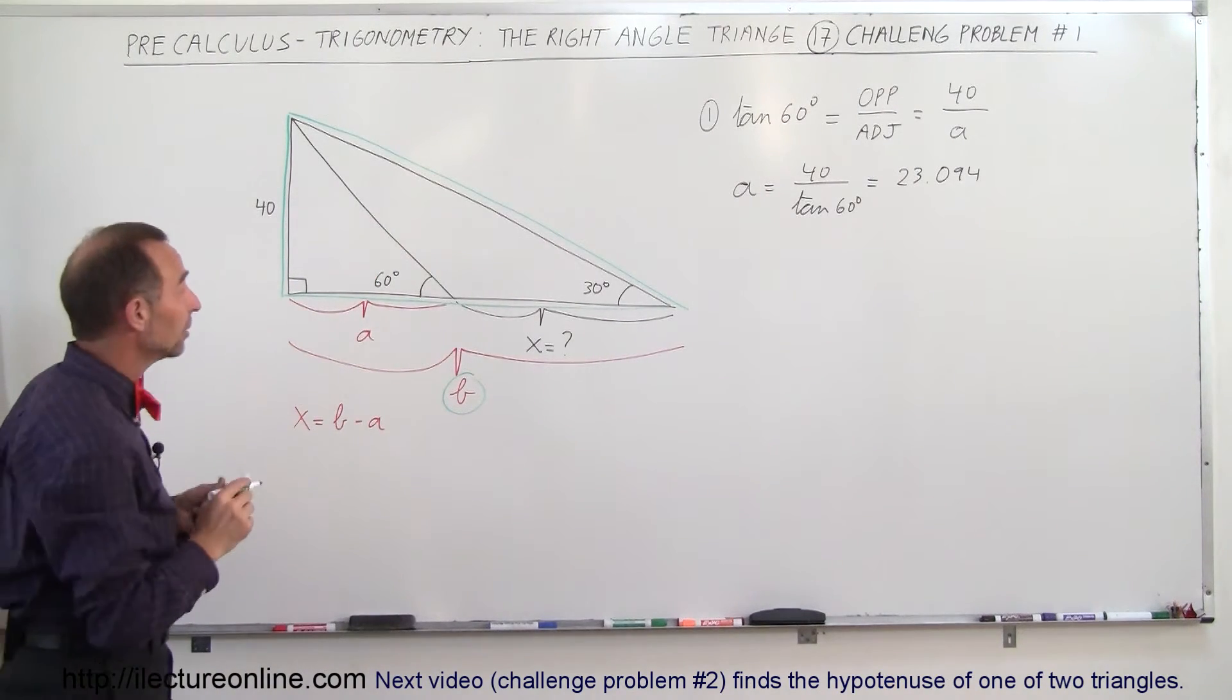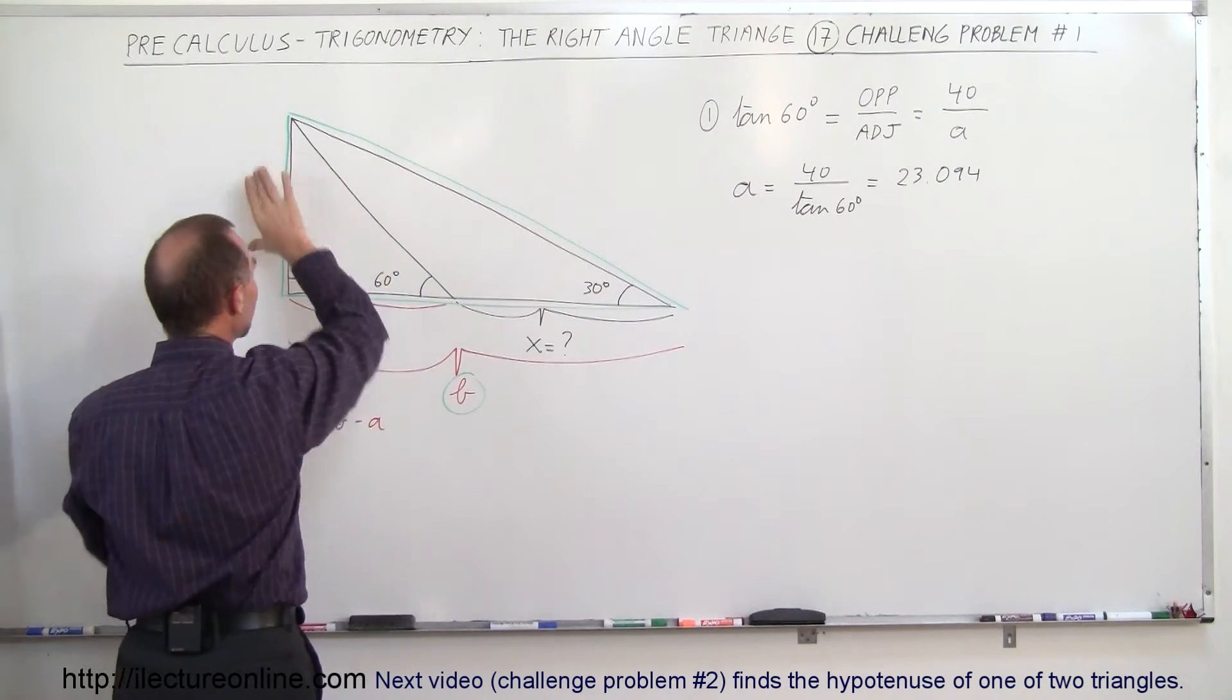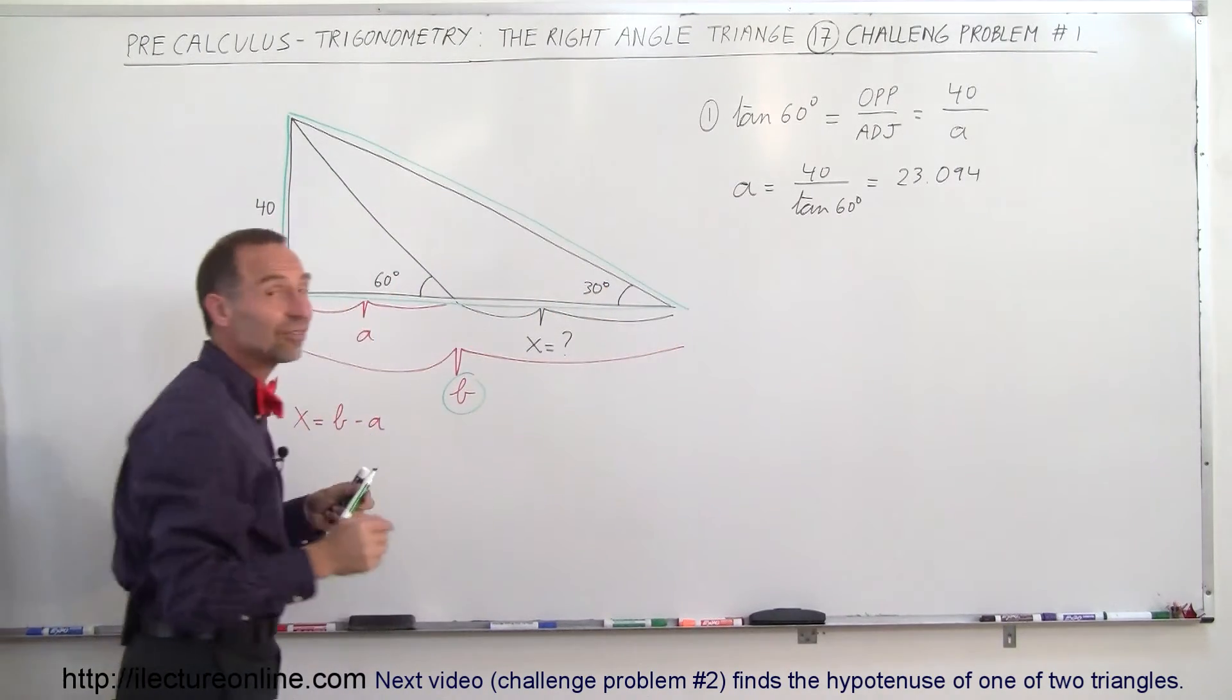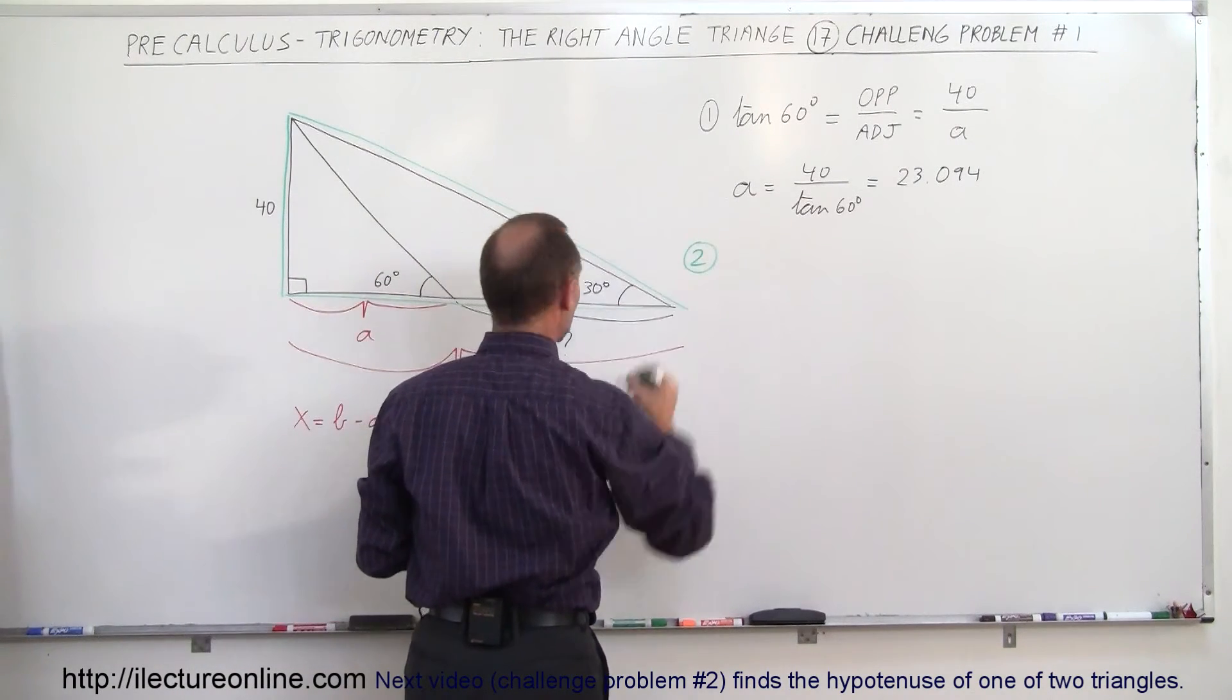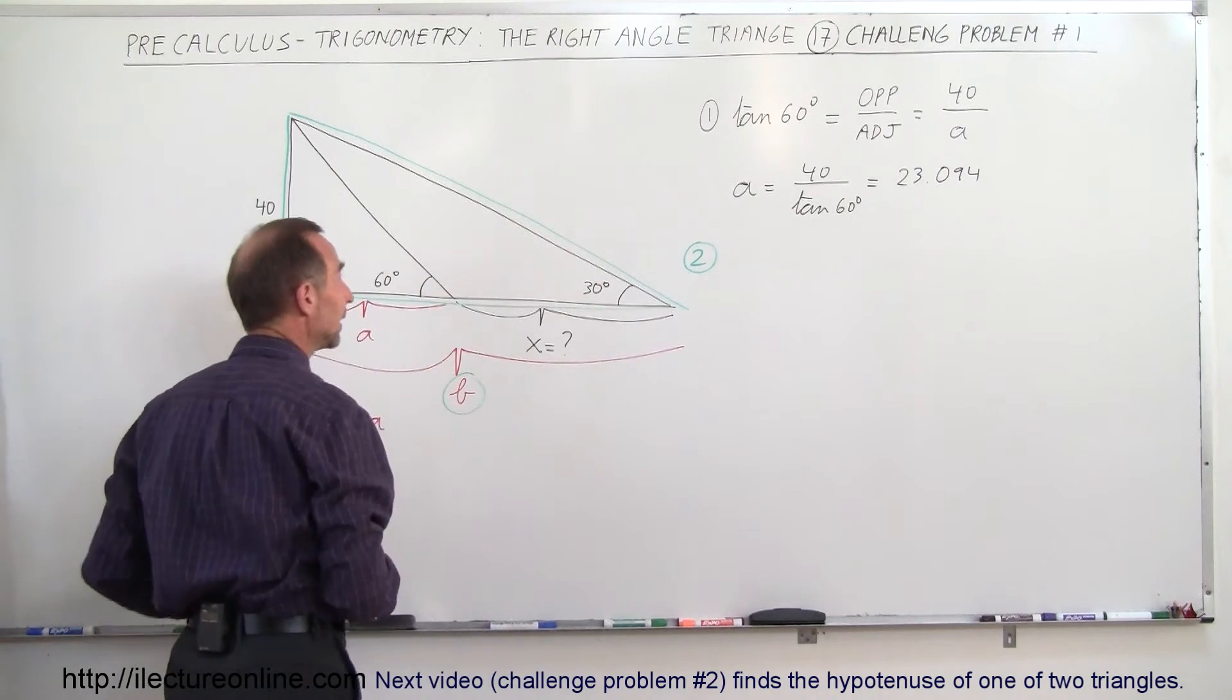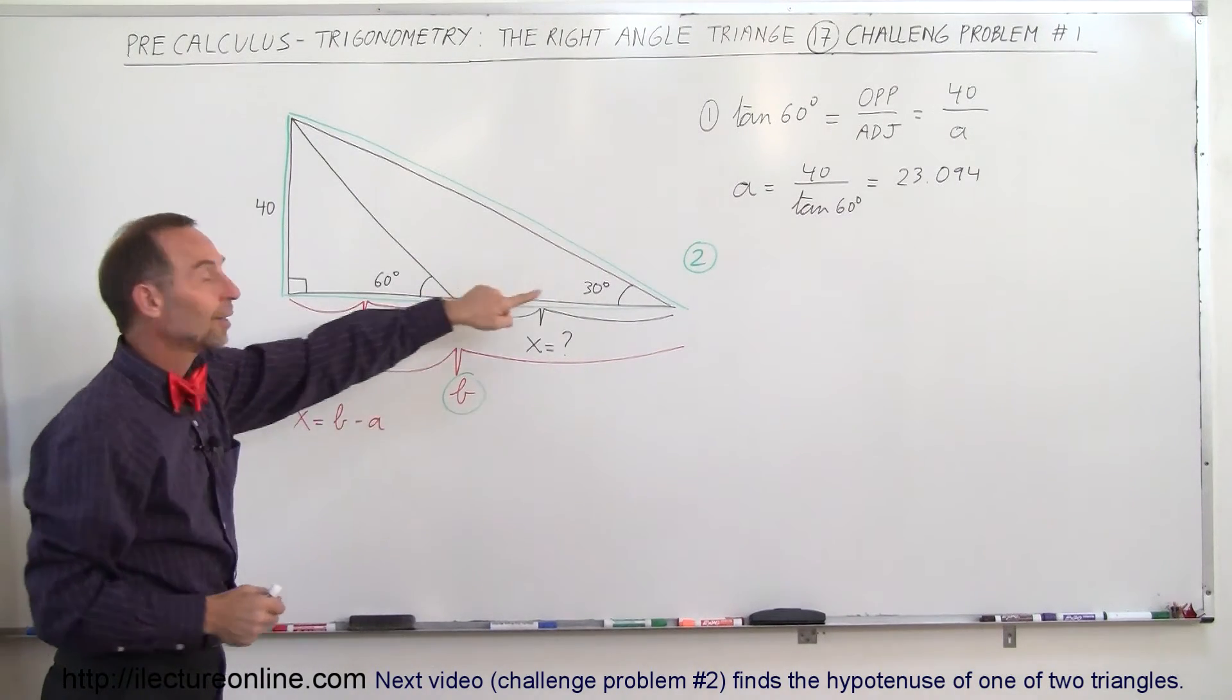Okay, so for the outside triangle we have the angle here which is 30 degrees, we have the opposite side 40, and then B becomes the adjacent side for the green triangle. So now to find B, we're going to use the following technique. Again, we have the opposite side, we don't know the adjacent side, we know the angle, we use the tangent again.